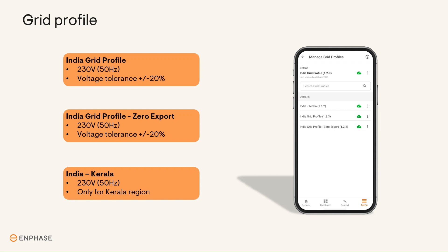Second is India Grid Profile Zero Export. This profile is specifically used for activating the zero export feature of the Enphase system. Please note: for using the zero export feature, both production and consumption CTs need to be installed. Third is India Kerala. This profile is only for the Kerala region.